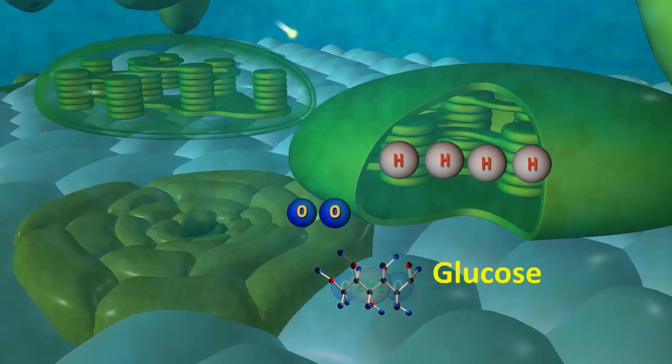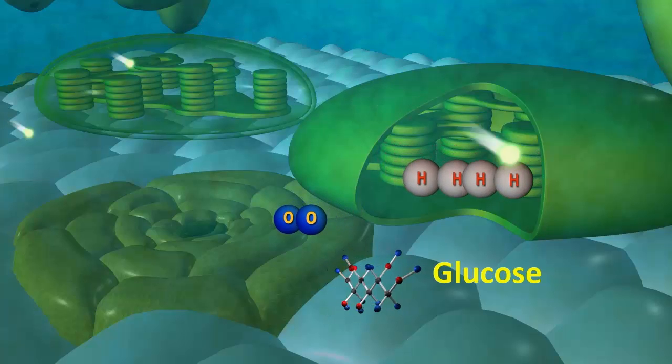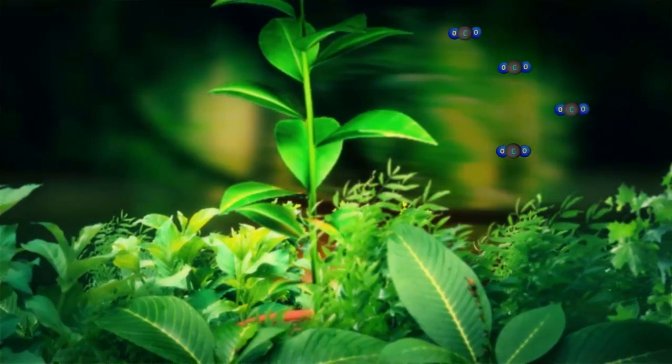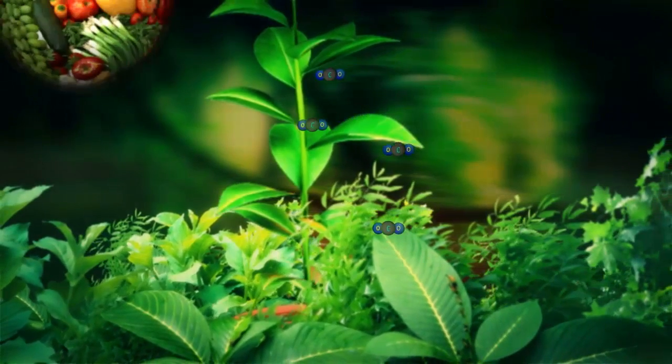The process: In sunlight, chlorophyll converts water absorbed by roots and carbon dioxide absorbed by stomata of leaves into food and oxygen.